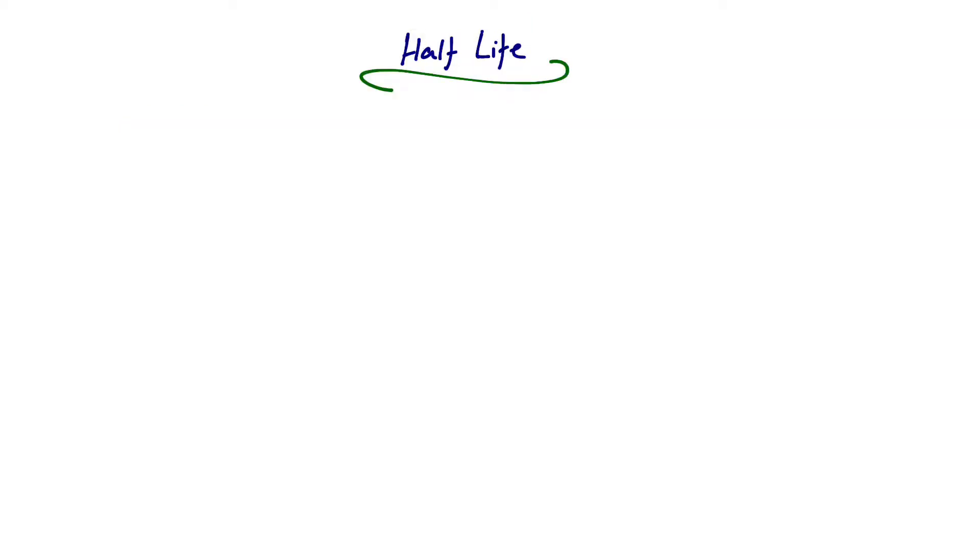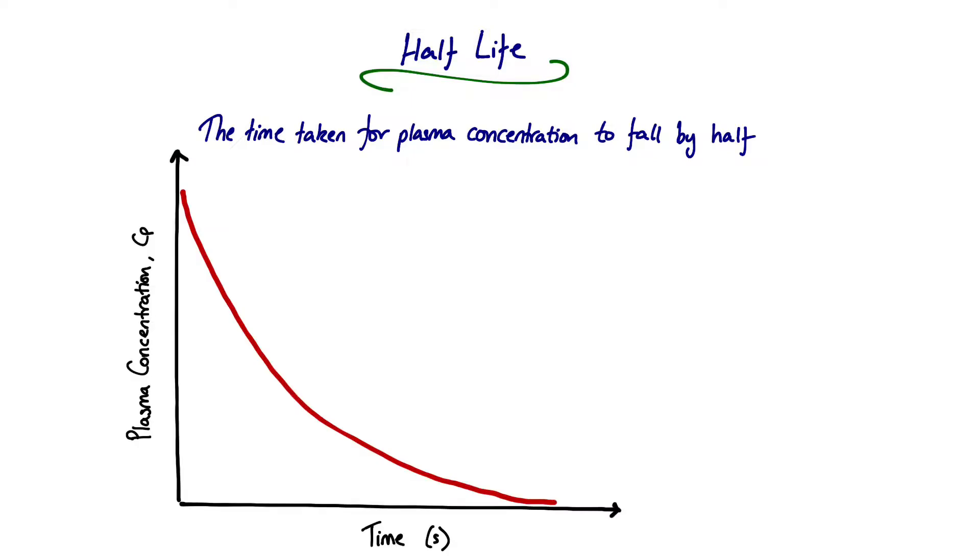Let's move on to half-life. The definition is the time taken for the plasma concentration to fall by half. If we look at our plasma concentration against time graph, our starting concentration is C₀ by definition. So half of that would be C₀ over 2, and if we extrapolate across, we get one half-life. That's T½ here, and our half-life is this distance here.